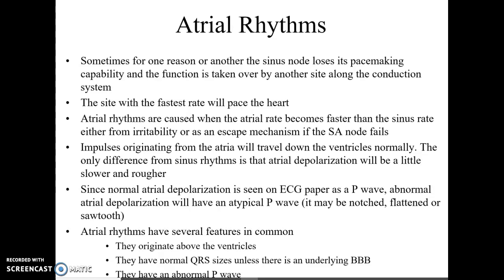There are a few features in common with atrial rhythms. They originate from above the ventricles — they're supraventricular in origin — meaning they come down the ventricular pathways normally. You know something comes down the pathways normally when you have a normal-size QRS. When you have a normal-size QRS that is less than 0.12, you know it had to come through the normal conduction route.